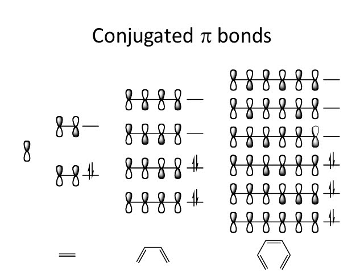Conjugated pi bonds occur when pi bonds interact with each other — when we have alternating double-single-double bonds. In 1,3-butadiene, these two pi bonds are conjugated with each other. When four p orbitals come together, they make a series of molecular orbitals — four p orbitals in gives four pi orbitals out. If we mix six p orbitals together, like in 1,3,5-hexatriene, we get six pi orbitals out, differing in their bonding and anti-bonding interactions.